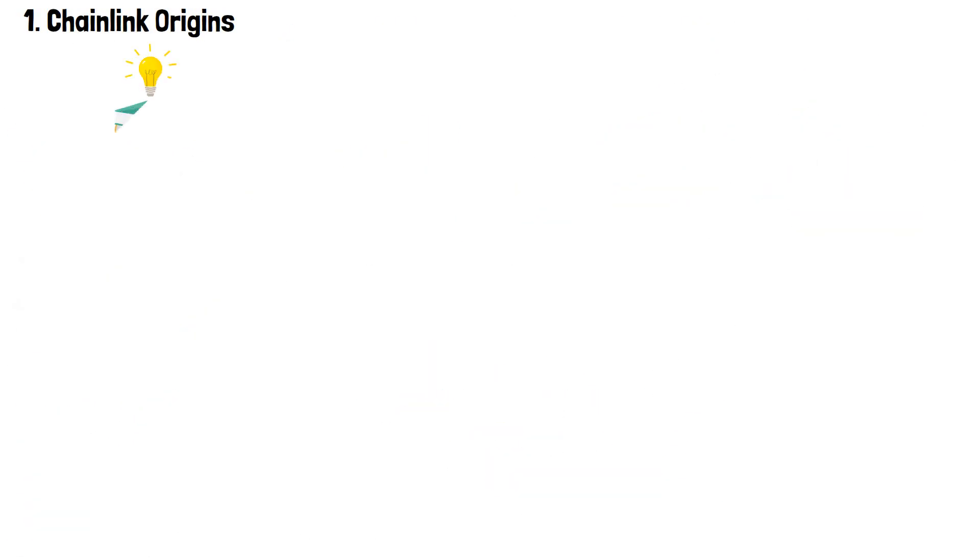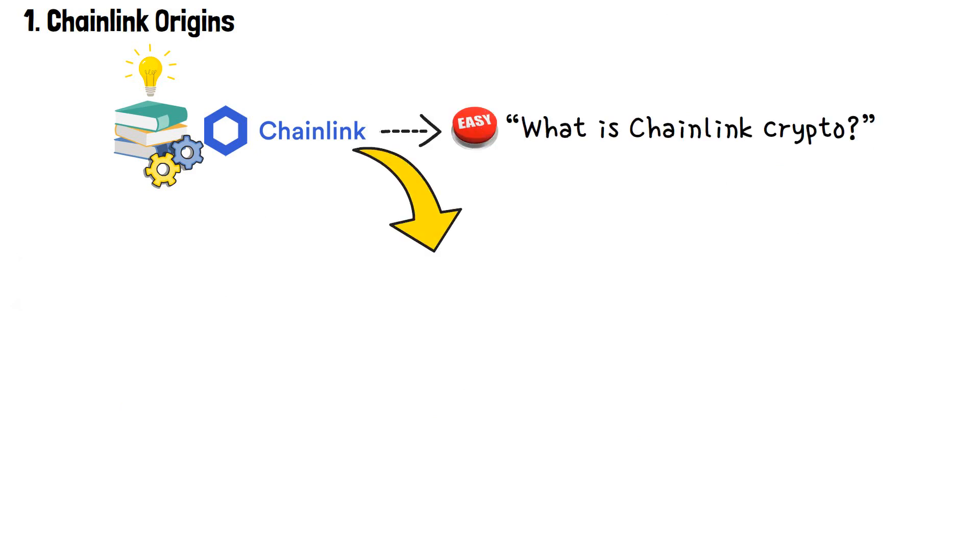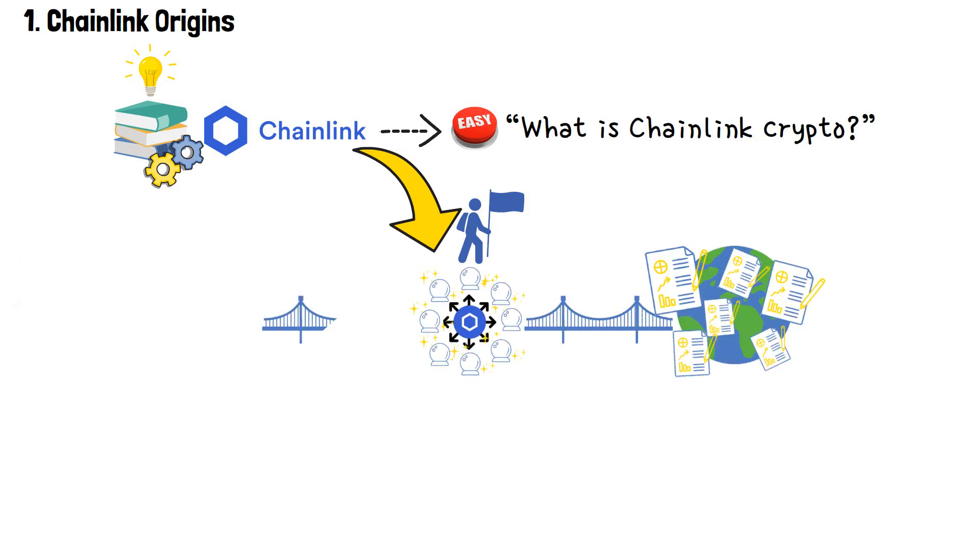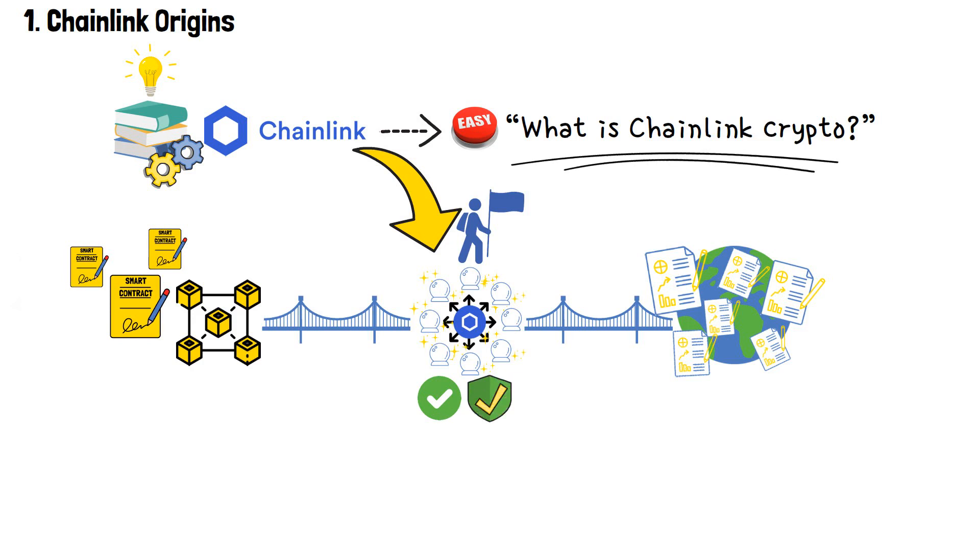Now, having explained the backstory of how and why Chainlink was created, it's easier to simply answer the question of what is Chainlink in crypto. Essentially, it's a pioneering decentralized Oracle network that bridges real-world data with blockchain smart contracts, ensuring accurate and reliable information integration. Okay, having covered this, we now know the answer to what is Chainlink in crypto. Let's talk about how does Chainlink work.